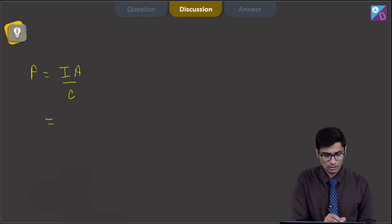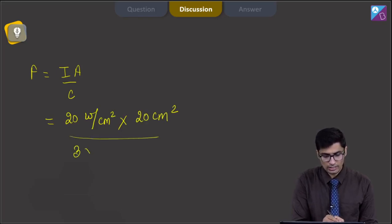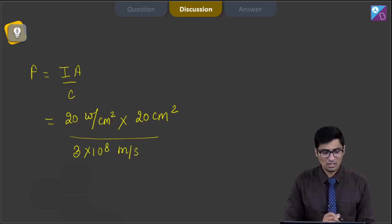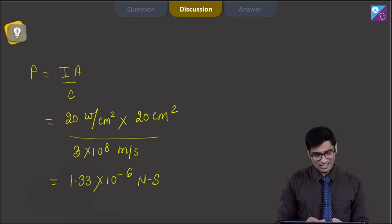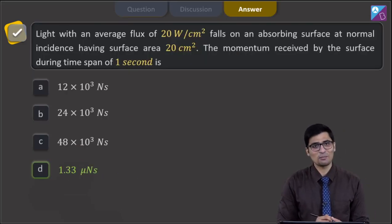Here I is given to be equal to 20 watt per centimeter square, multiplying by area which is 20 centimeter square and if we divide by the speed of light that is 3 into 10 raised to power 8 meter per second. The final answer turns out to be equal to 1.33 into 10 raised to power minus 6 Newton seconds and hence for this question the correct answer is option number D.